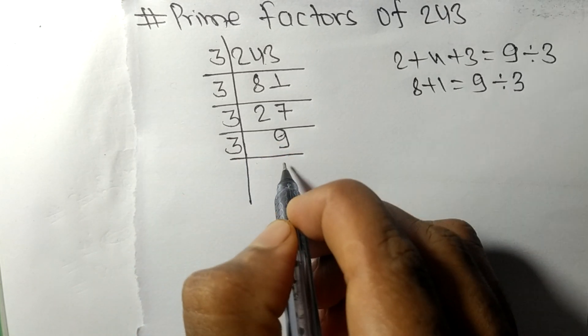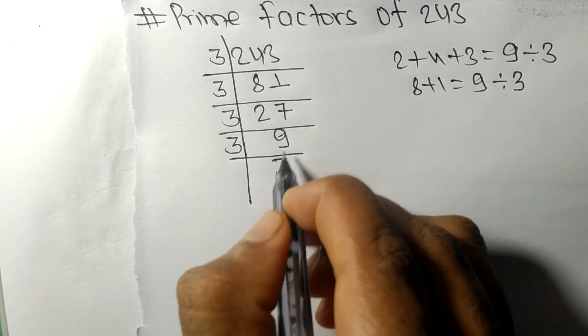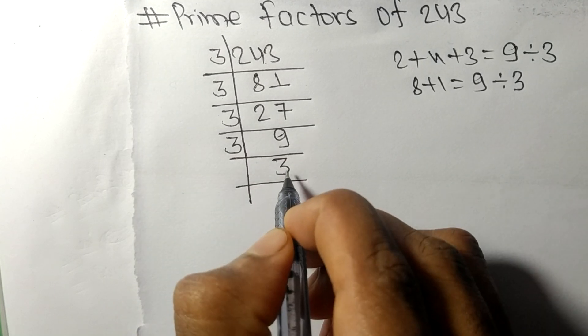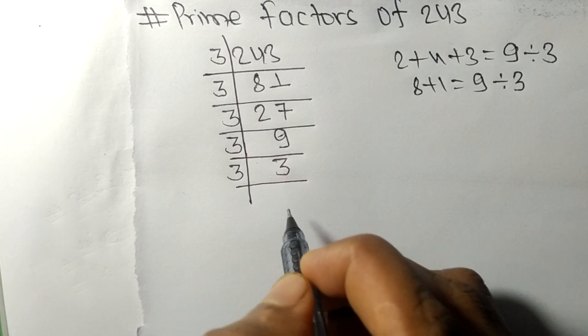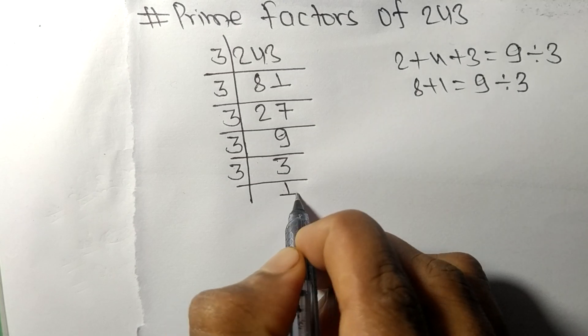9 is divisible by 3, so 3 times 3 is 9. And 3 is divisible by 3 itself, and we get here 1.